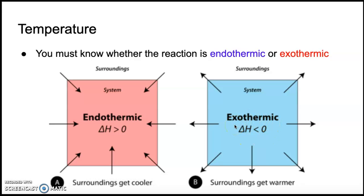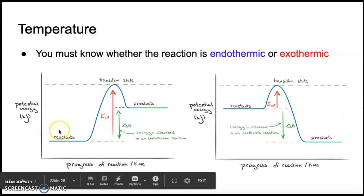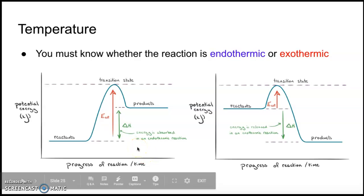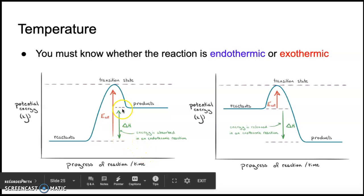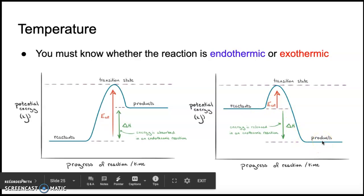We can also think about this in terms of energy profiles where we've got the reactants on the left side, the products on the right side, plotting potential energy versus the progress of the reaction. For an endothermic reaction, the products are at a higher energy — the system has absorbed energy, delta H is positive, and we end higher than we started. It's the opposite for an exothermic reaction: the system loses energy going from reactants to products, delta H is negative, and the products are lower than the reactants.